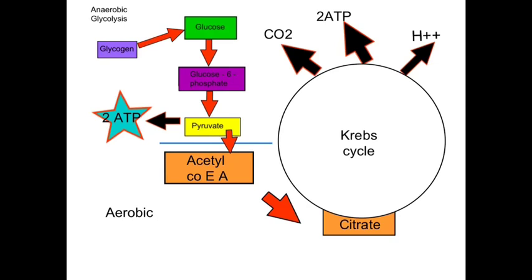During glycolysis, two molecules of ATP are reproduced. The pyruvic acid formed during glycolysis is added to an enzyme called coenzyme A to become acetyl coenzyme A. This is then allowed to enter the next stage in the aerobic breakdown, which occurs within the mitochondria and is known as the Krebs cycle.